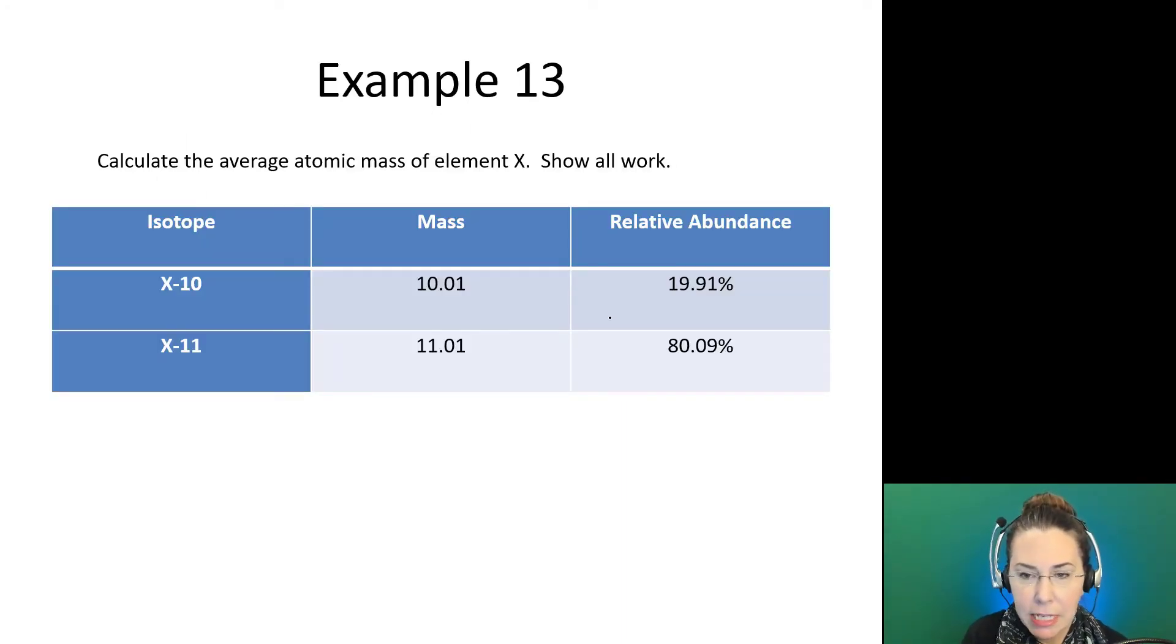In our example 13, I would like for you to try this one. We're going to calculate the average atomic mass of element X. We have X isotope with a mass of 10 and X-11. Those would be the mass numbers, but we have the actual masses here which is 10.01 and 11.01. The relative abundance of the 10.01 is 19.91. The relative abundance of the 11.01 is 80.09.